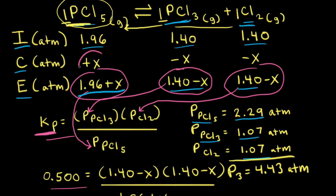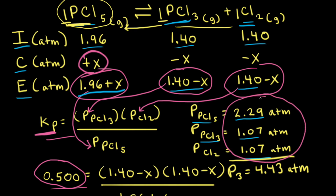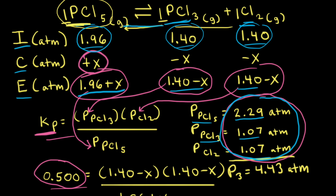The math shows that X is not a very large number. This is because Kp = 0.500, which is close to 1. When K is close to one, there is an appreciable amount of both reactants and products at equilibrium, as we can see from the equilibrium partial pressures. Since equilibrium requires decent amounts of both sides, we don't see a huge change from the initial partial pressures. There is a shift to the left that decreases the pressure from P2 = 4.76, but the change is not large, which is why P3 only drops to 4.43 atm.